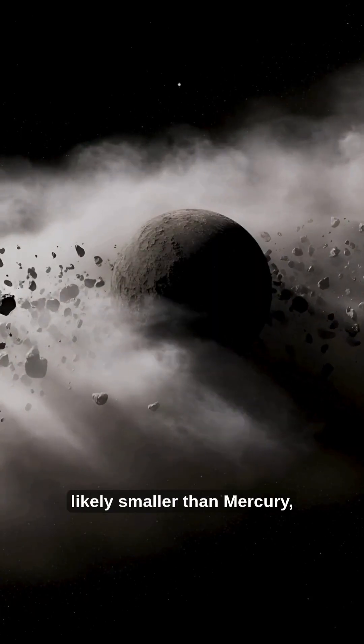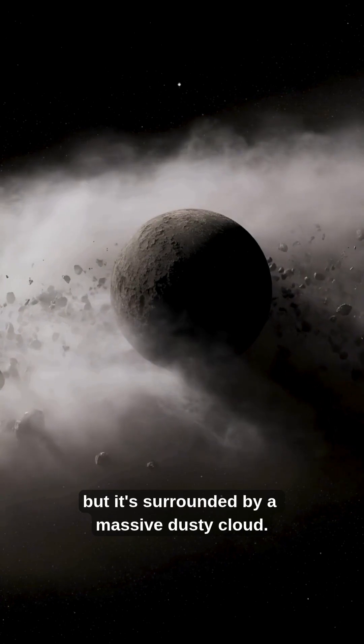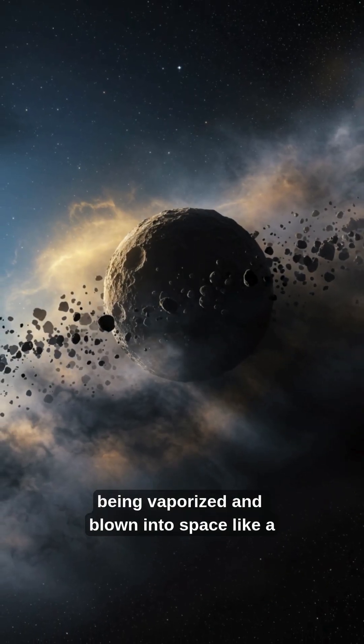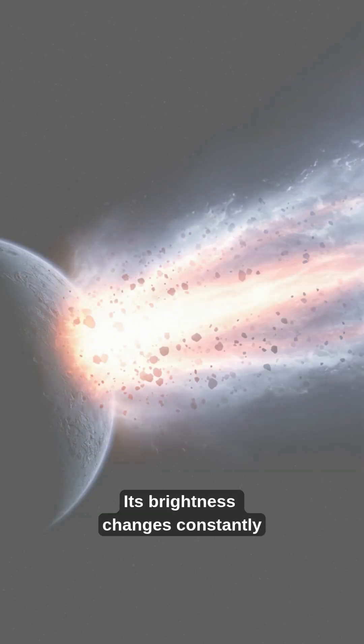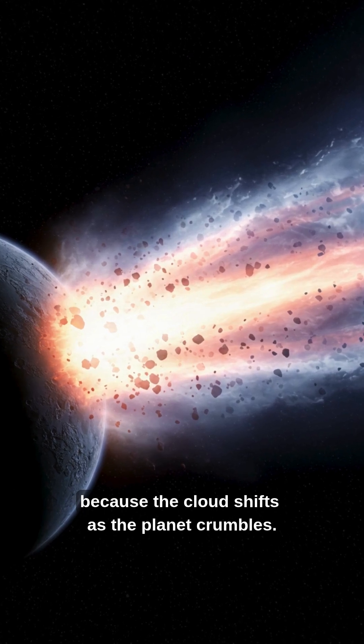The planet is small, likely smaller than Mercury, but it's surrounded by a massive dusty cloud. That dust is actually the planet itself, being vaporized and blown into space like a comet tail. Its brightness changes constantly because the cloud shifts as the planet crumbles.